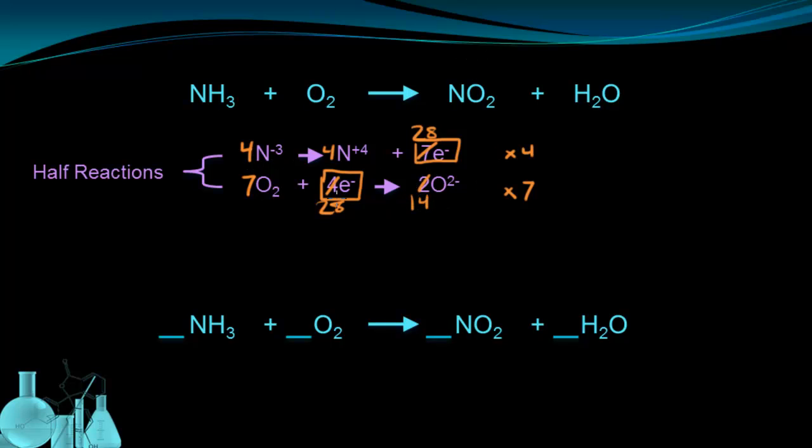Now these coefficients I wrote in here to represent multiplying by four and multiplying by seven, these are going to directly match the coefficients of the actual balanced reaction. So let's see what that looks like. This 4NH3 comes from the first ammonia molecule here. That means the ammonia molecule is going to get a coefficient of four, the same one that's right here.